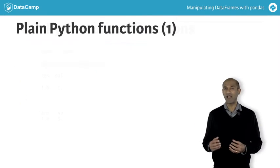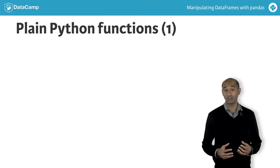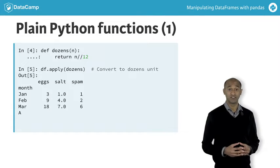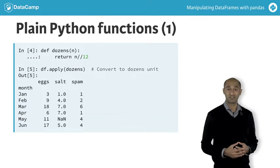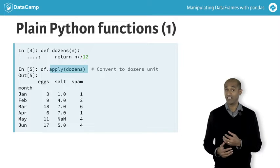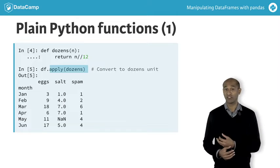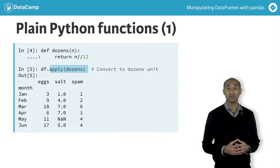If pandas floorDiv and numpy's floorDivide were not available, we could make a custom function to do this. Here, we call it dozens. The data frame apply method, called here using dozens, executes that function with each entry of the data frame, again without writing any loops.